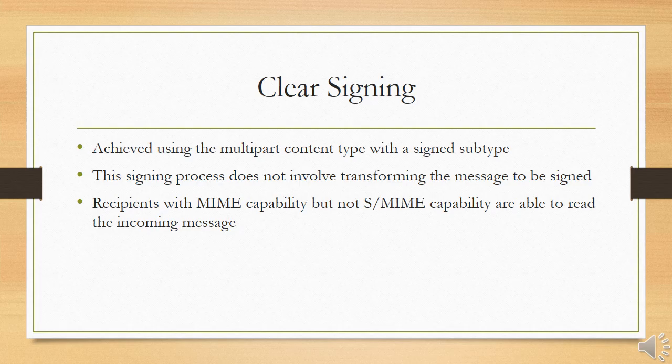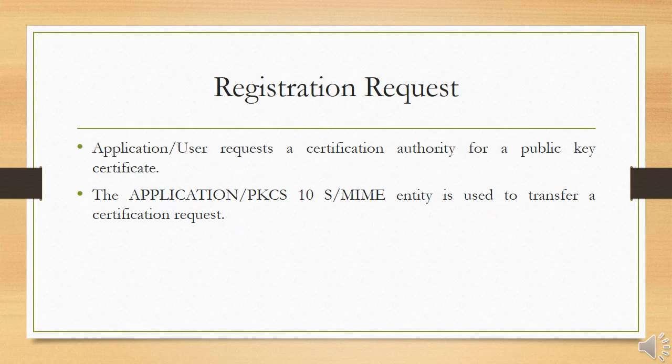The first part is then processed in the same manner as signed data, but in this case an object with a signed data format is created that has an empty message content field. This object is a detached signature, which is then transfer-encoded using base64 to become the second part of the multipart signed message. This second part has a MIME content type of application and a subtype of PKCS7-signature.